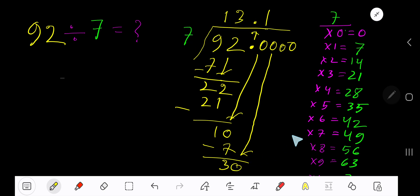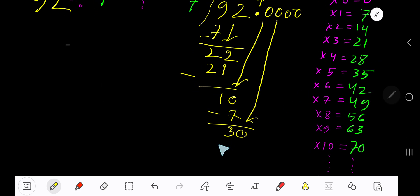7 goes into 30 how many times? Look, 5 times is 35 which is greater, so 4 times. 4 times 7 is 28. Subtract: 2.